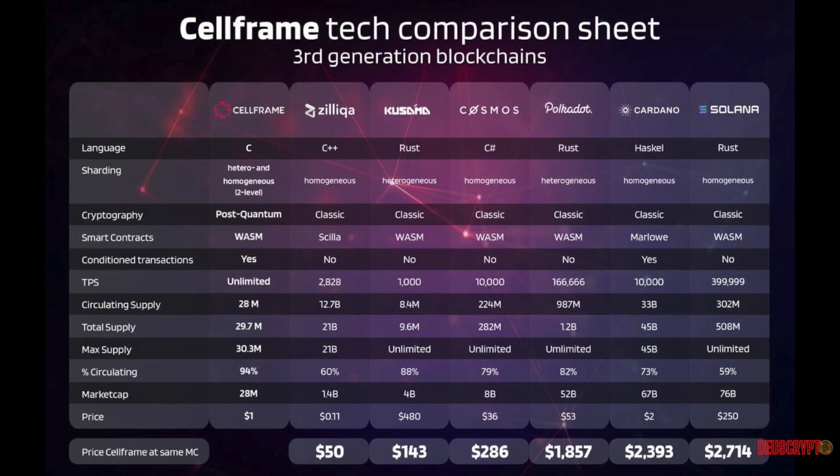The CELLFRAME network communications are based on two key points: two-level sharding and peer-to-peer inter-shard communications. On the first level, there's the private shard, the CORE network. The CORE network has its own chains, set with its own consensus and the token, the CELL token.